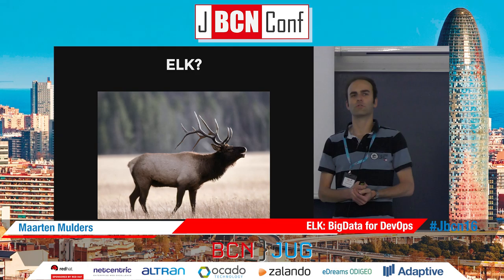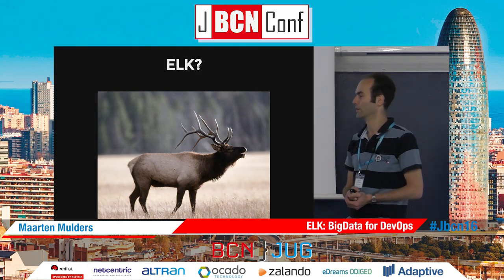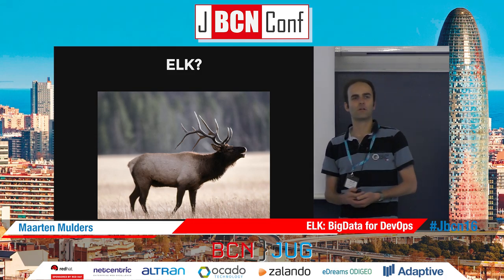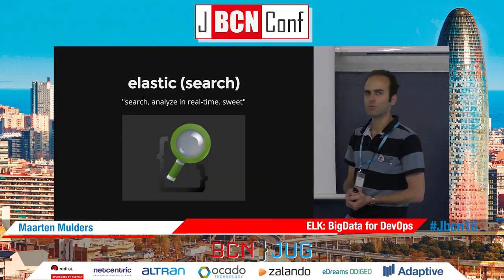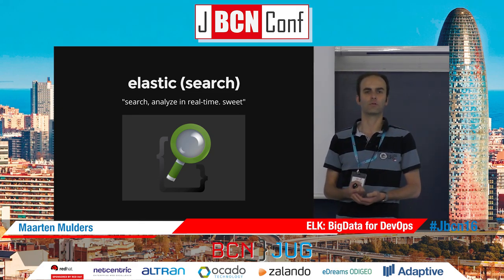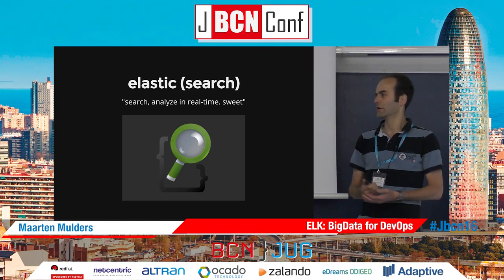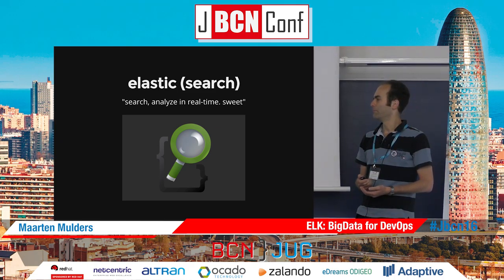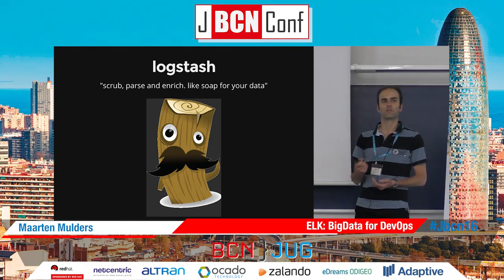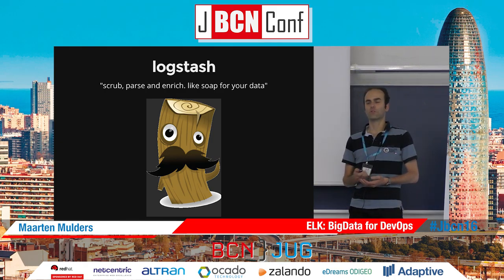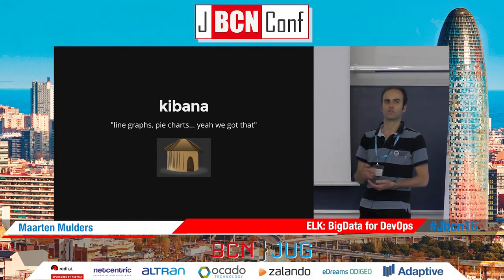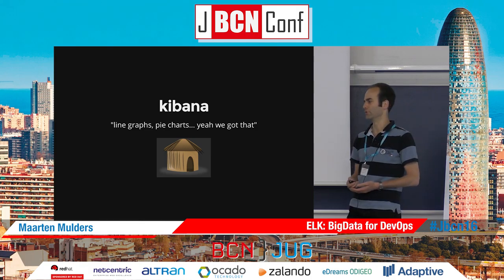ELK is about Elasticsearch, which is basically a document database which allows you to do very quick lookups, very well structured. It's about Logstash, which is a tool to scrape your logging, to parse it, to process it. And it's about Kibana, which is all about pie charts, graph charts, bar charts - all the kinds of charts that you might wish to use.